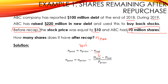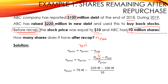Where D new is the new debt raised during 2019, so it is 220 million dollars. D old is the old debt, so it's the debt of 2018: 100 million dollars. P prior is 10 dollars. As a result, N post will be equal to N prior — 70 million — minus D new, the 220 million.